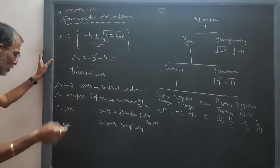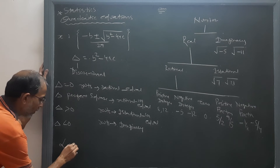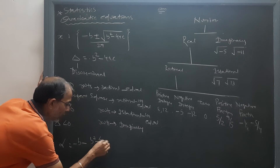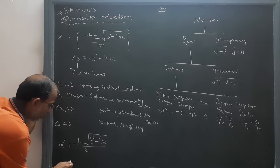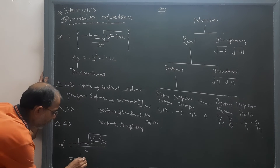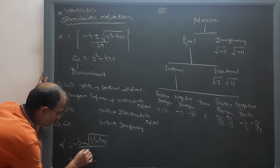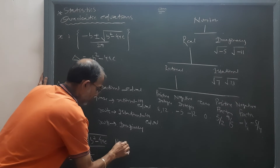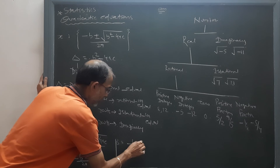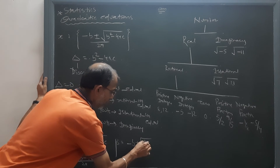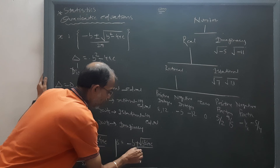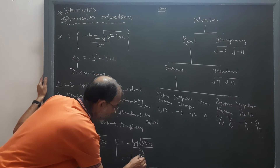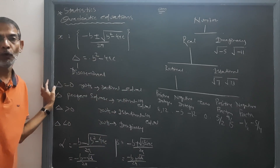Now these roots are called alpha and beta. Alpha equals minus B minus under root B squared minus 4AC upon 2A, or minus B minus root of delta upon 2A. The second root is called beta, that means minus B plus under root B squared minus 4AC upon 2A, or minus B plus root of delta upon 2A.